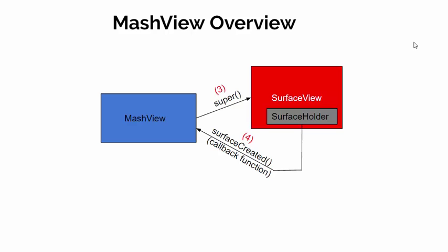The surface view also contains another object called surface holder. Surface holder contains the canvas and also contains a bunch of utility functions that allow us to manipulate sprites on that canvas.